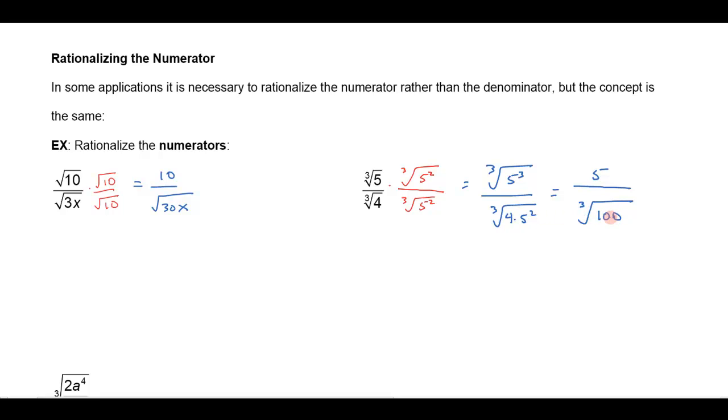Then you might think, are there any perfect cube factors in 100? No, you can see it right here. Here's the factorization, 4 times 5 squared, so I can't simplify that any further and that would be my final result.